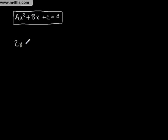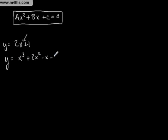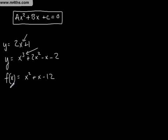For example, if we had y = 2x + 1, this is a linear equation because the power on the x is just 1. If we had y = x³ + 2x² - x - 2, this is a cubic because the third power is the highest power on the x's. If we had f(x) = x² + x - 12, then this is a quadratic. I've used function notation here, f(x), where y = f(x) is what we call a function of x. So this is a quadratic equation.